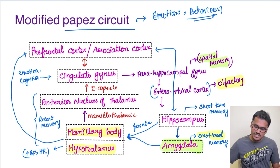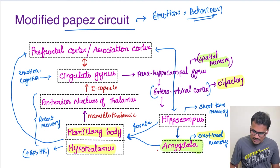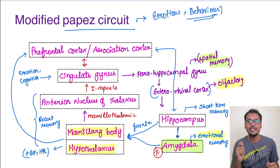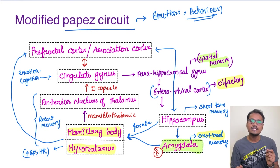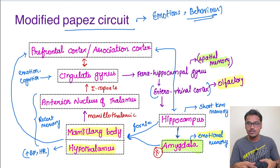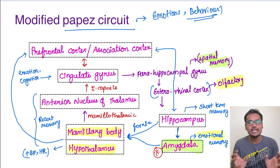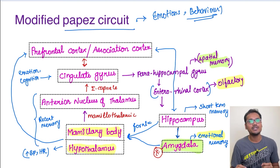One more interesting thing about the amygdala: it is very strong in females, and that is the reason why their emotional memories are very strong. Whenever any incident happens, females tend to associate it with their emotional memories, and this becomes very strong because the circuit is entirely concerned with the memory aspect. Since their memory is associated with emotions, their Papez circuit is very strong, which is why emotional memories are particularly good in women. I hope it is clear.